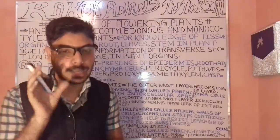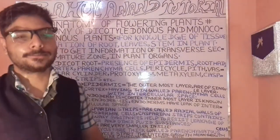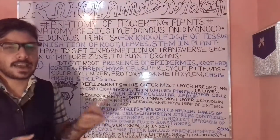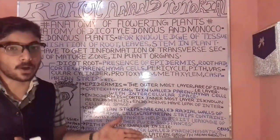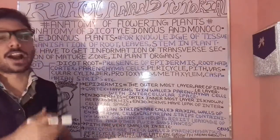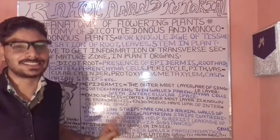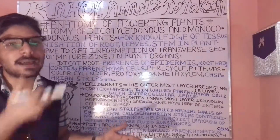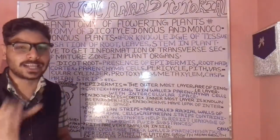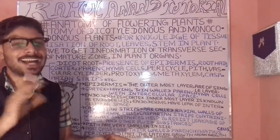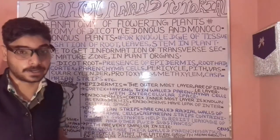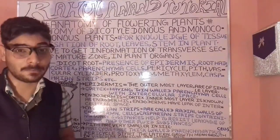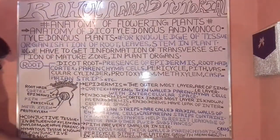Now let's understand another type of component present in the dicot root — the conjunctive tissue. In the case of conjunctive tissue, in between or in the middle portion with reference to the xylem and phloem, we will be having the presence of parenchyma cells. Where xylem and phloem emerge, parenchyma cells are present — these are known as conjunctive tissue.